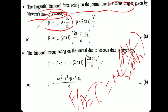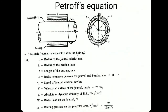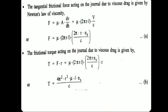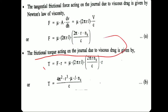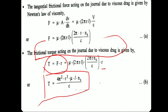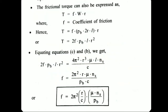The area of the bearing with its circular arrangement is 2πr·l, so the frictional force becomes F = μ·2πrl·(v/c). Here v = 2πr·ns, which is the surface velocity due to shaft rotation, divided by clearance c. The frictional torque due to viscous drag is force times radius r, giving: T = 4π²·r³·μ·l·ns / c. This is the first torque equation.